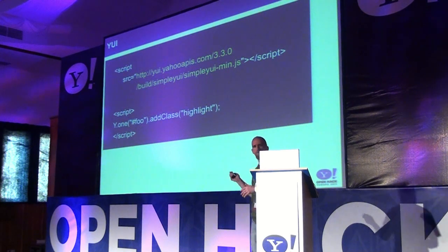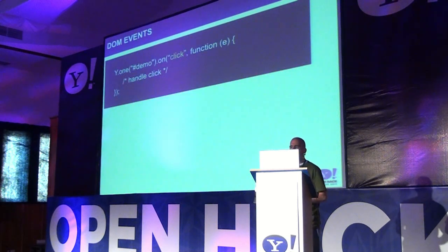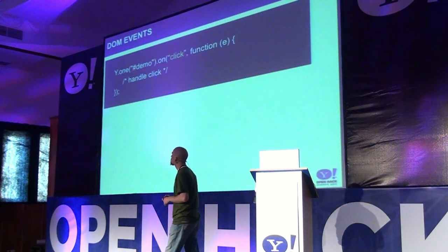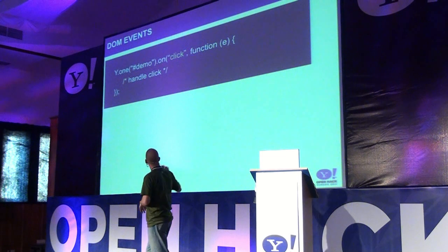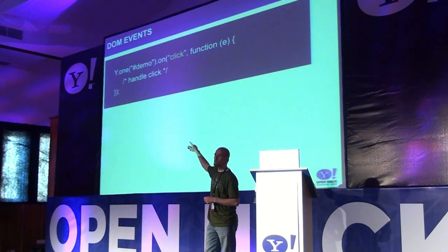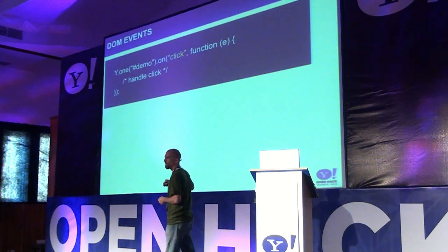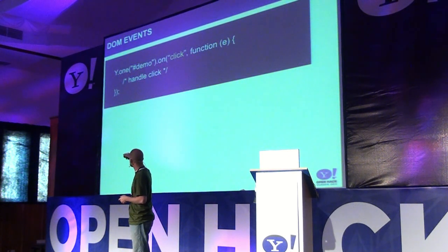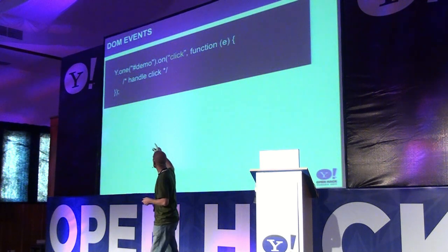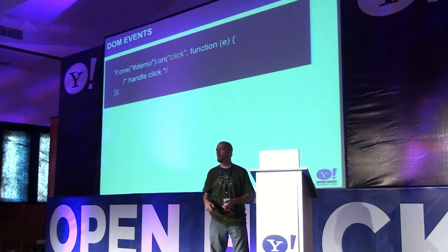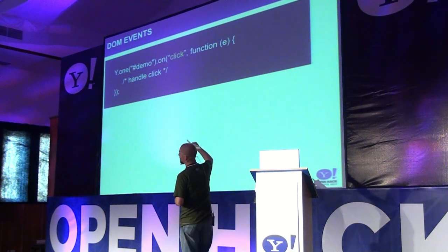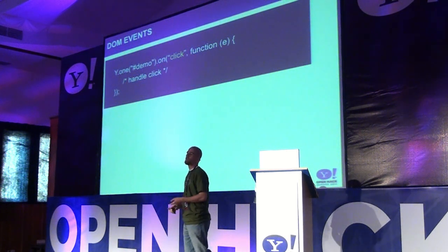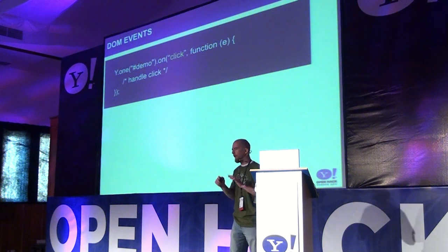That's the very basics — add this script tag to your page and you get the YUI API. DOM events couldn't be easier. There's one method for doing event subscription, whether it's for DOM events or for custom events: it's on(). Here you have the one() method being used again to capture a demo element off the page using the hash to capture it by ID, then just calling the on() method — pass it the name of the event you want to subscribe to and the callback function. You can use that for mouse events, click events, gesture events.